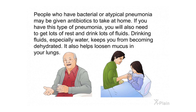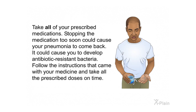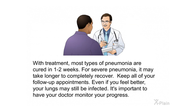People who have bacterial or atypical pneumonia may be given antibiotics to take at home. You will also need lots of rest and plenty of fluids — especially water — to prevent dehydration and help loosen mucus in your lungs. Antiviral medications can reduce the severity of certain viral infections if taken within the first one to two days after symptoms begin. Take all of your prescribed medications, as stopping too soon could cause pneumonia to return or lead to antibiotic-resistant bacteria. With treatment, most types of pneumonia are cured in one to two weeks; severe cases may take longer. Keep all follow-up appointments even if you feel better, as your lungs may still be infected.